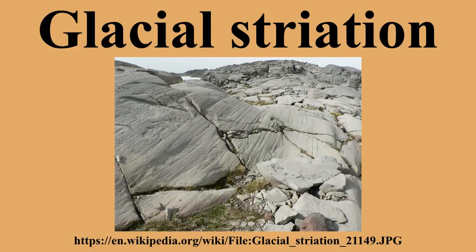Glacial striations are scratches or gouges cut into bedrock by glacial abrasion. These scratches and gouges were first recognized as the result of a moving glacier in the late 18th century when Swiss alpinists first associated them with moving glaciers. They also noted that if they were visible today, the glaciers must also be receding.